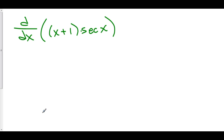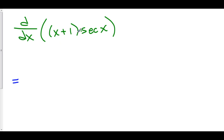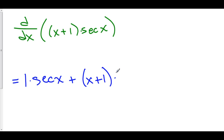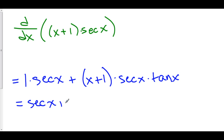Let's try one more. Here we have a polynomial, x plus one, times secant x. Same thing — we take the derivative of the first. The derivative of x plus one is one, times the second, which is secant x, plus the first, which is quantity x plus one, times the derivative of the second. The derivative of secant x is secant x tangent x. So here we have secant x, plus x plus one, times secant x, times tangent x.